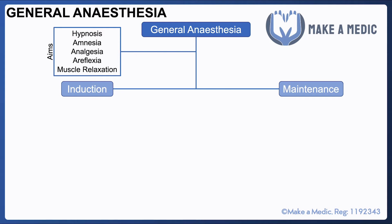Hypnosis is a lack of awareness about what's going on. Amnesia means you forget the experience. Analgesia refers to the management of pain. Areflexia means all the normal reflexes that occur within the body need to be suppressed. And finally, muscle relaxation means that all the muscles in the body, especially those around the pharynx, need to be relaxed.